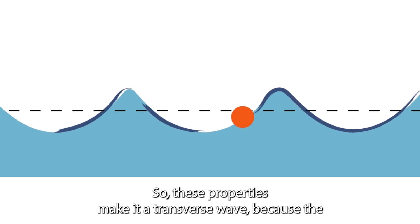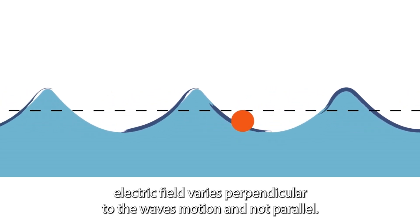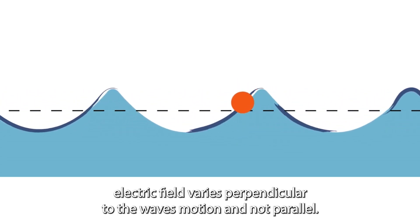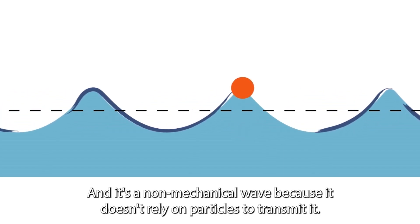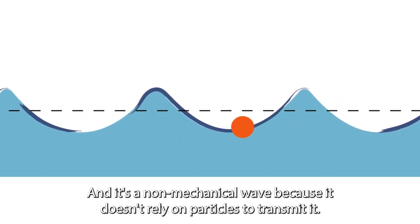So these properties make it a transverse wave because the electric field varies perpendicular to the wave's motion and not parallel, and it's a non-mechanical wave because it doesn't rely on particles to transmit it.